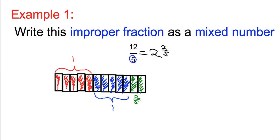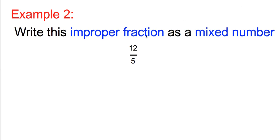Okay, let's try another example now. So I want to turn 7 over 3 into a mixed number.